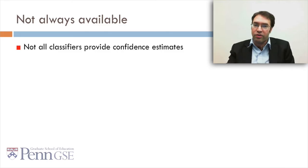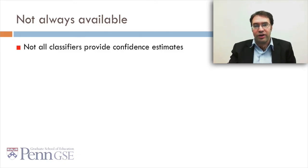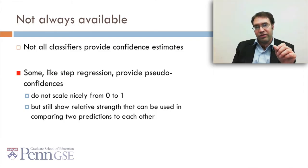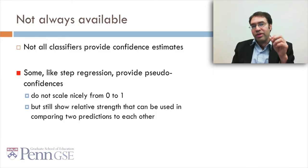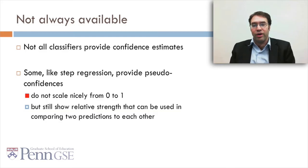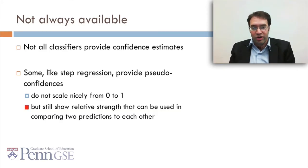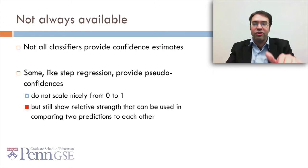Confidences are not always available — not all classifiers provide confidence estimates. Some, like step regression, provide pseudo-confidences: estimates of how strong the prediction is that don't scale nicely from 0 to 1. These still show relative strength that can be used in comparing two predictions to each other, and they're still worth keeping and thinking about.